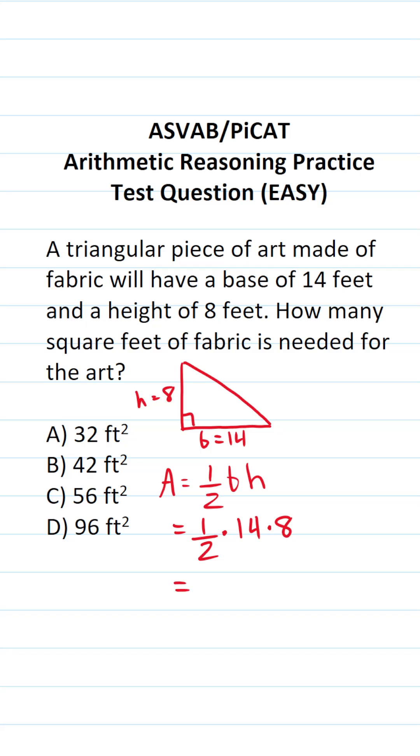If you haven't done this math by hand in a long time, it may be a little bit tricky. What is one half of 14? It's going to be 7. So this becomes 7 times 8. 7 times 8 is 56.